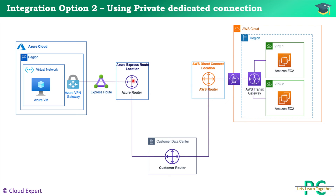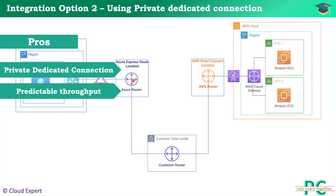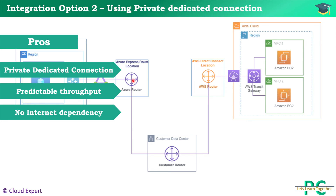Let's review the pros and cons of this approach. First, this is a private dedicated connection — you are not using the internet, so you will always get predictable throughput. Both Express Route and Direct Connect allow you to select the bandwidth: it could be 1 Gbps, 10 Gbps, or 100 Gbps, based on your requirement. Third, there is no internet dependency — unlike the IPSec tunnel approach, which is totally dependent on your ISP, Direct Connect is a physical connection with no internet dependency.